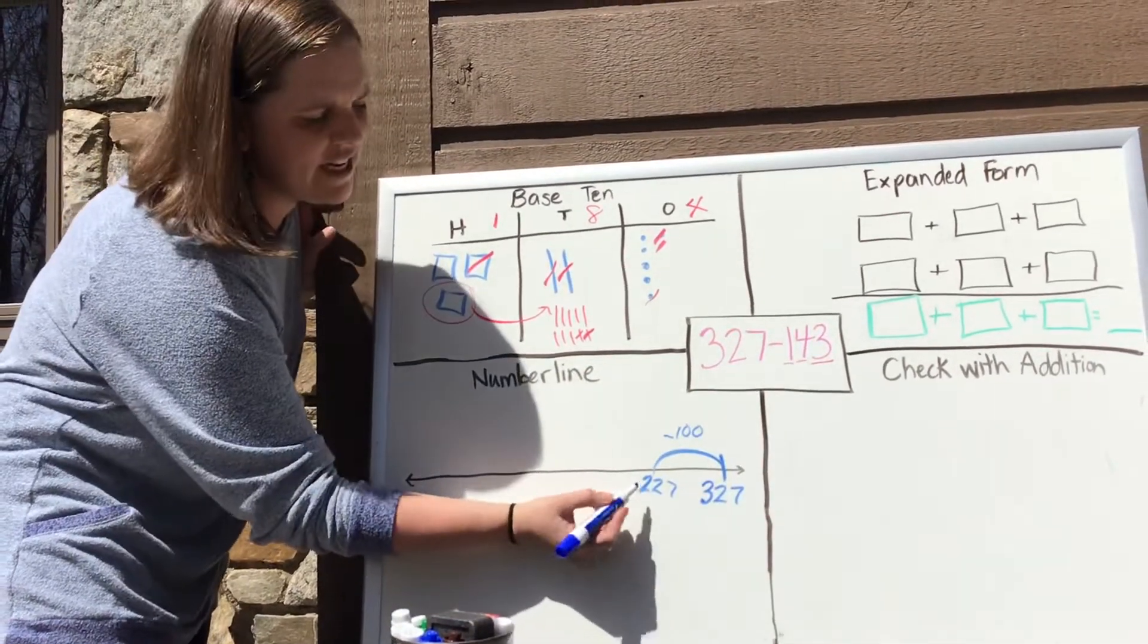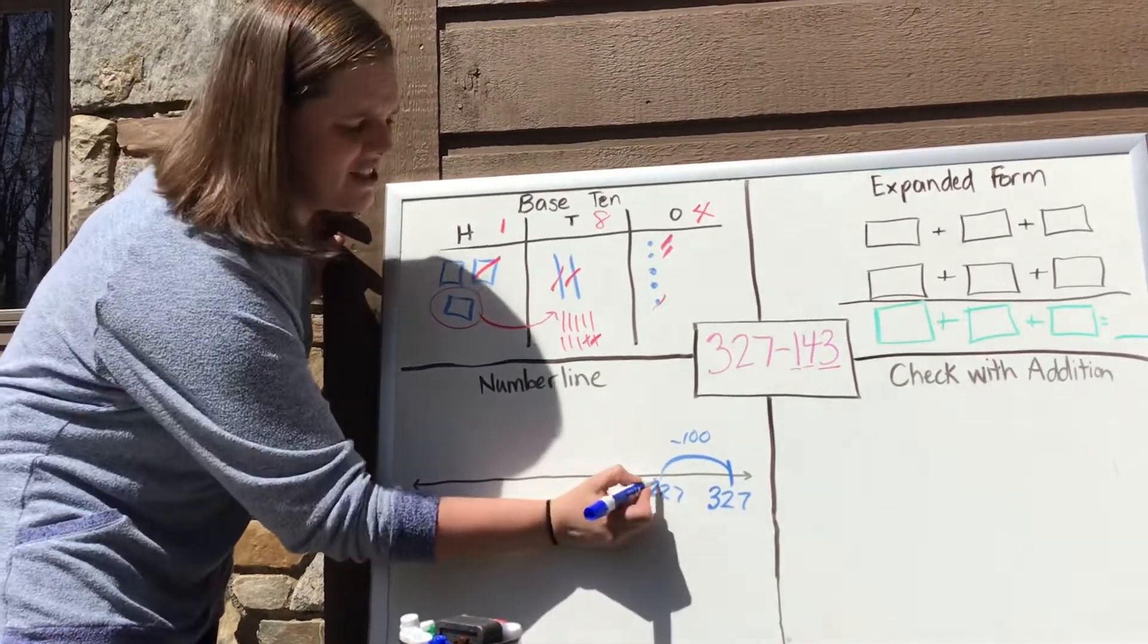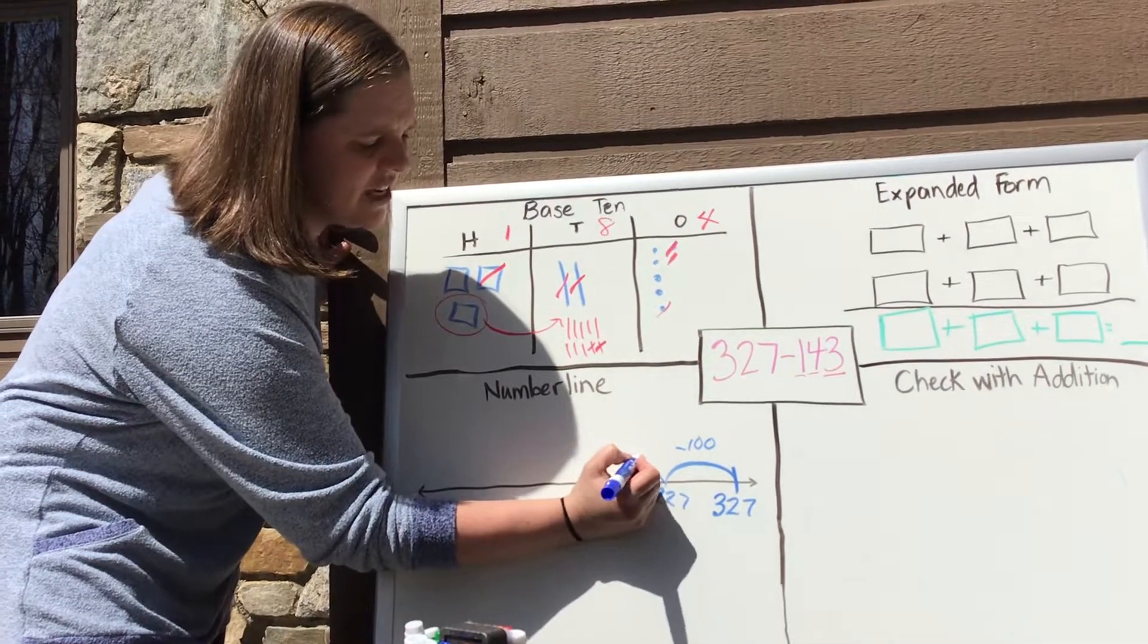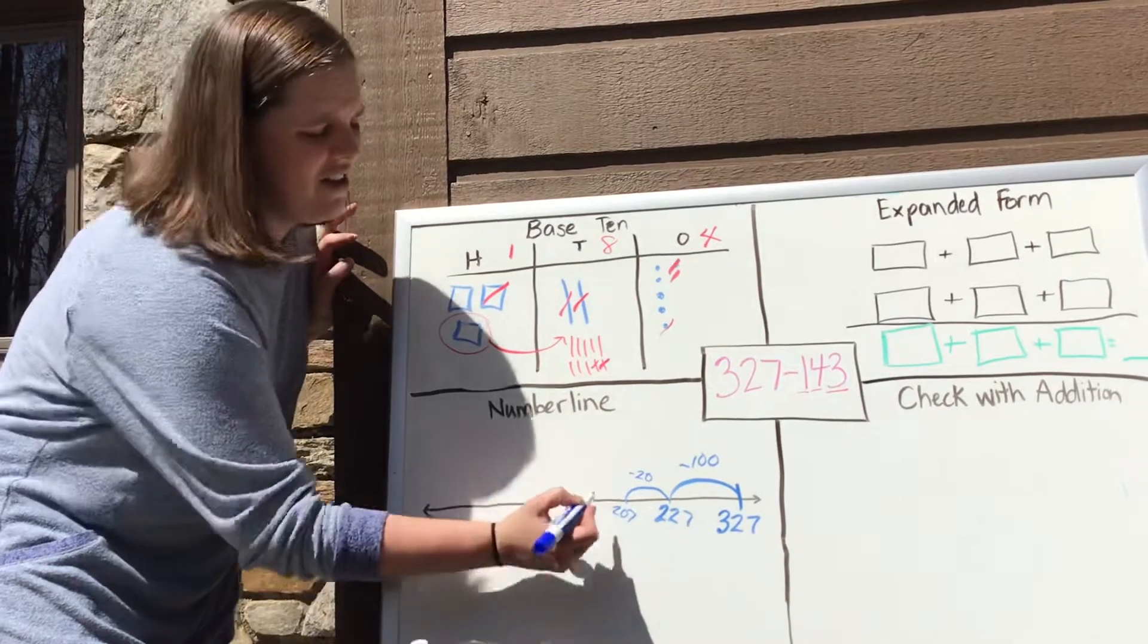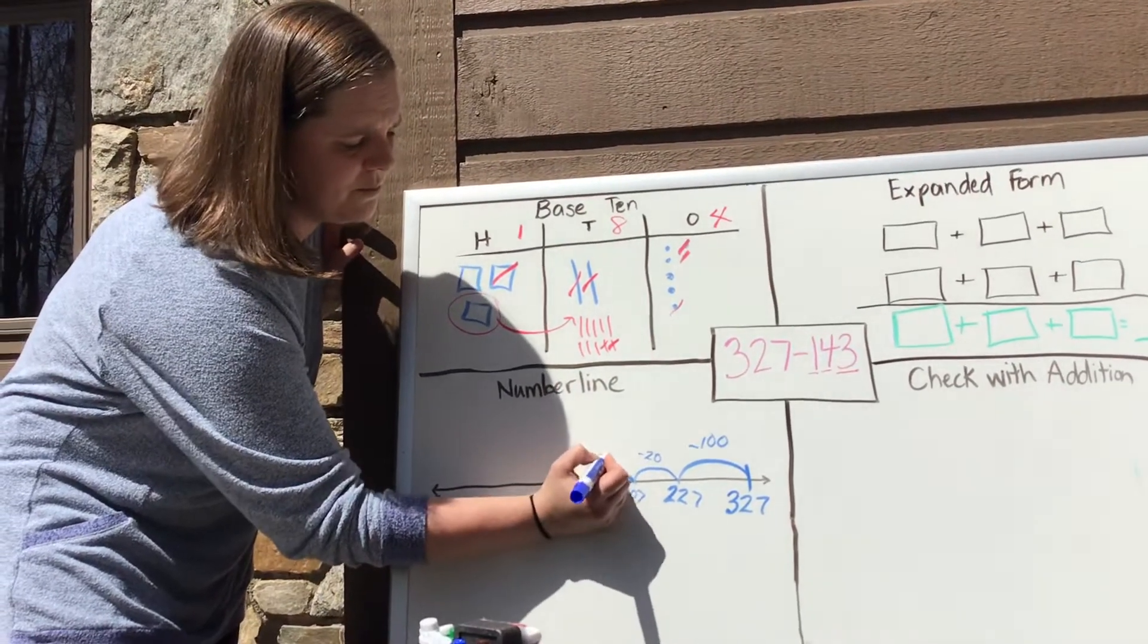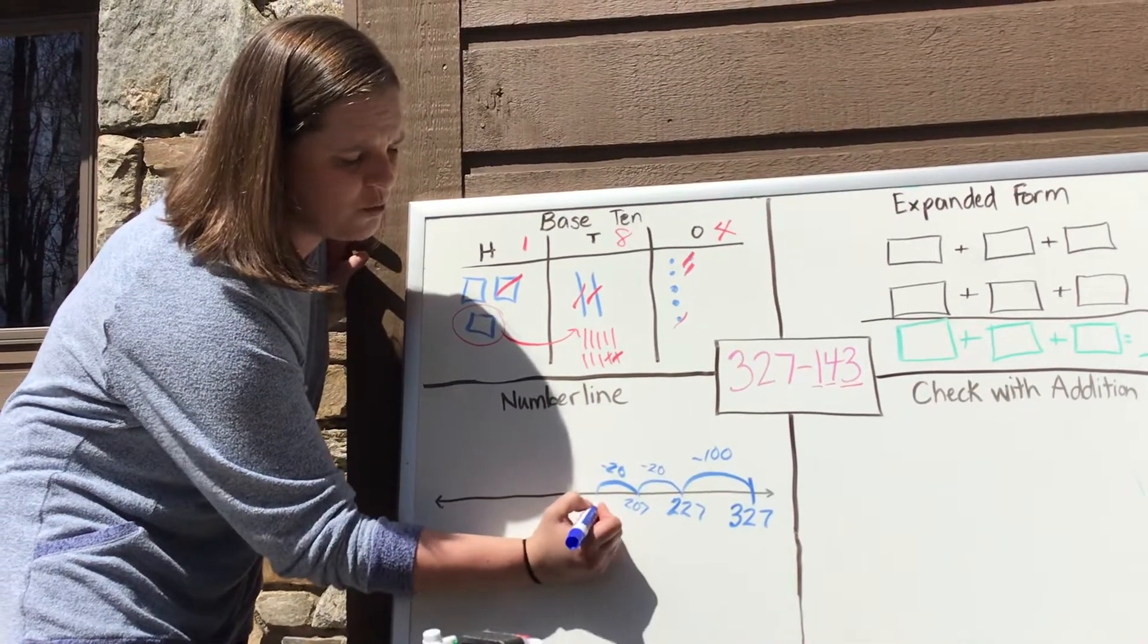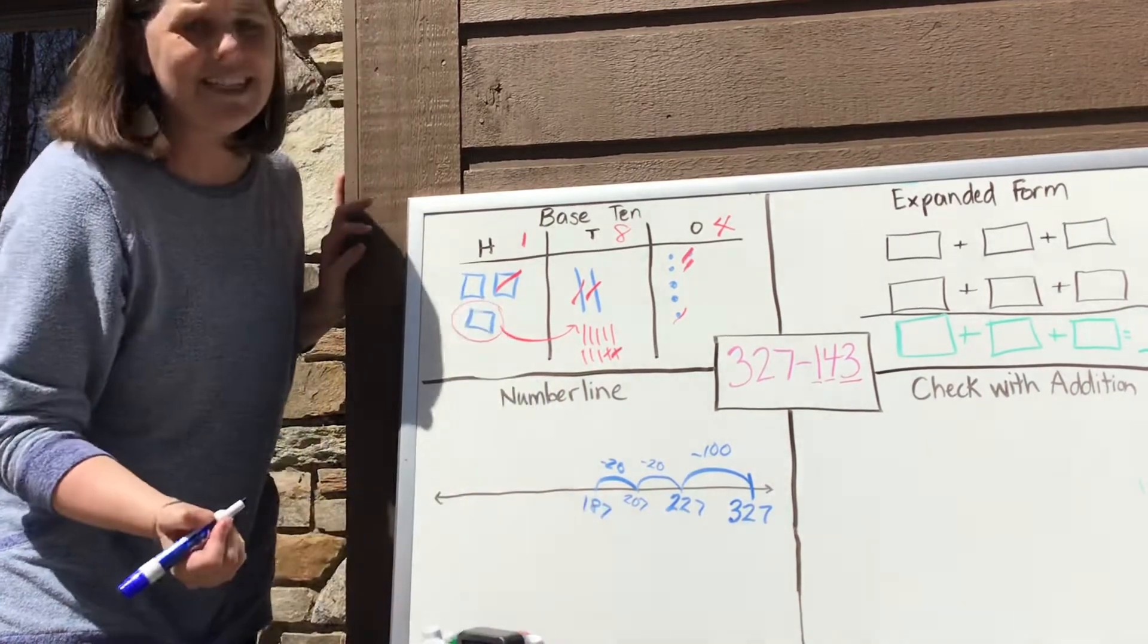Then I'm going to take away four tens. And I'm going to do this in two sets. So I'm going to take away two tens. So I'm going to subtract 20, and that's going to get me to 207. Then if I subtract 20 more, that's going to get me to 187.